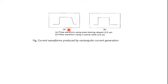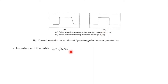These are the two waveforms obtained from the two circuits: the first using a pulse network and the second using coaxial cables. To produce a rectangular pulse, a coaxial cable has impedance given as Z0 = √(L0/C0), where L0 and C0 are the inductance and capacitance per unit length.